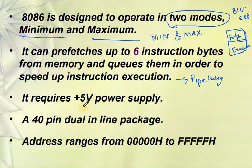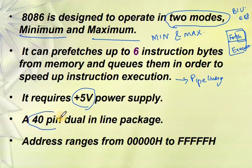Next point: the 8086 uses a plus 5 volts supply, same as the 8085. Both use a 40-pin dual inline package — 40 pins for the 8086 and 40 pins for the 8085.